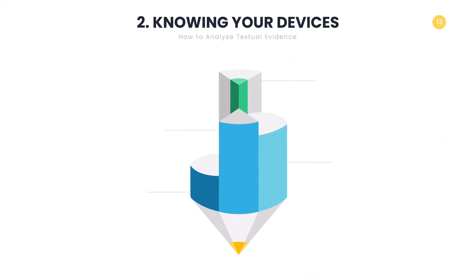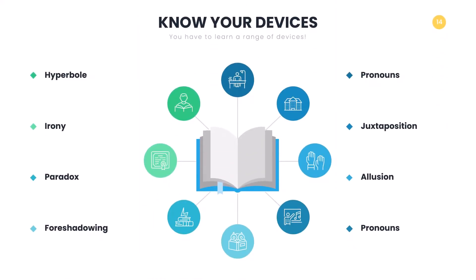The second part is knowing your devices. This may have different terms depending on your school or syllabus, but anything that refers to aesthetic features, stylistic devices, positioning techniques, or literary devices — at the end of the day, they are the same. You need to be able to identify your devices quickly and easily, but you also need to know them and their effect. Devices are techniques such as symbolism, irony, foreshadowing, hyperbole, pronouns, and so on. Each of these techniques is different, and so is their effect. The use of irony and the use of hyperbole serve two different purposes.